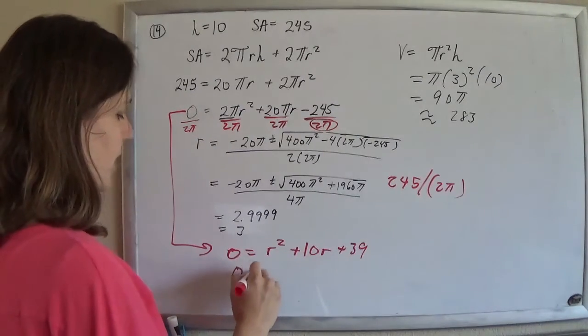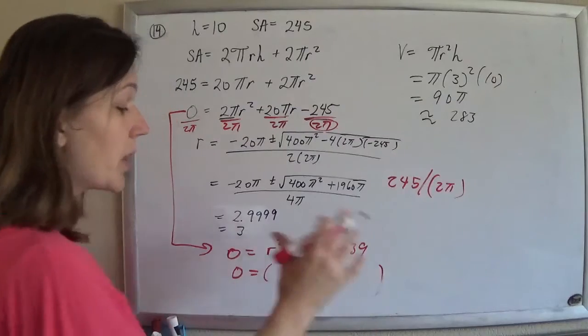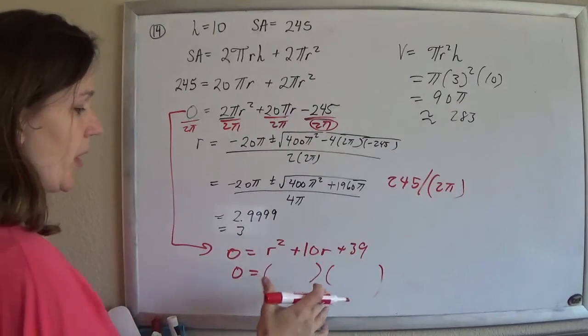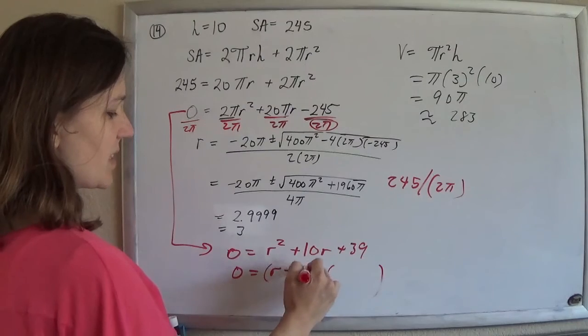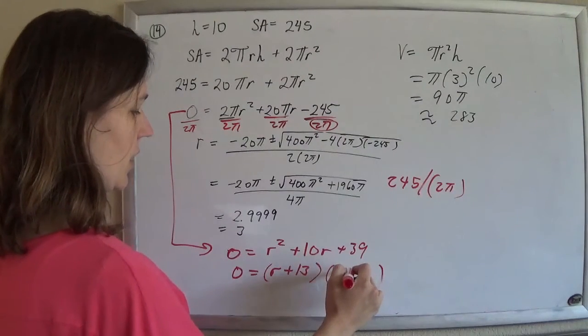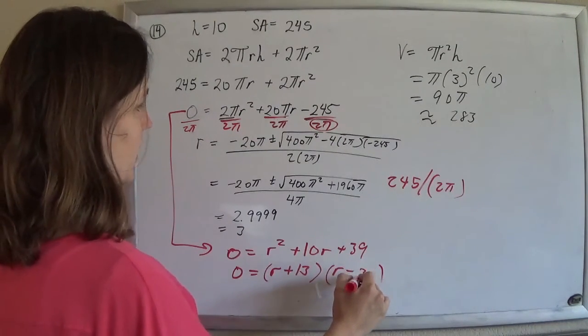So I don't really like the book's answer, but it's okay. It's still good to be able to approximate. They rigged this so that this factors nicely. See, this is r plus 13, r minus 3.